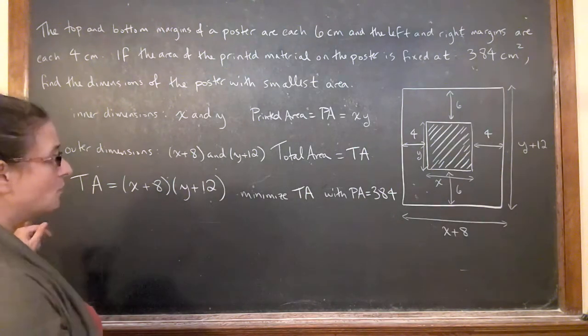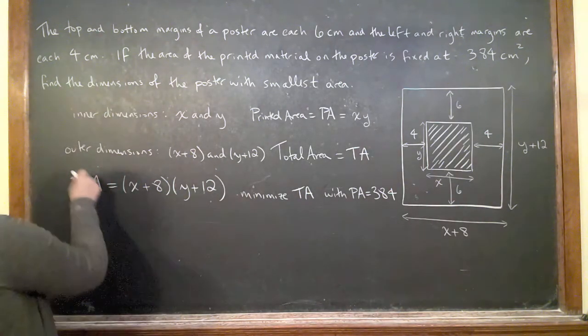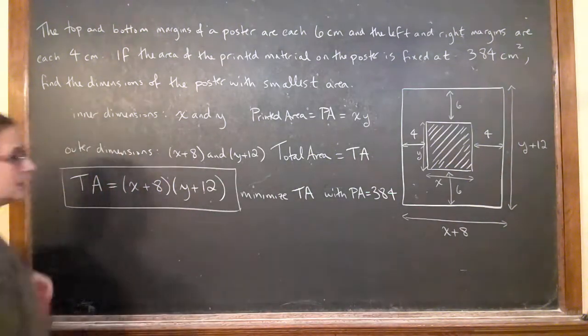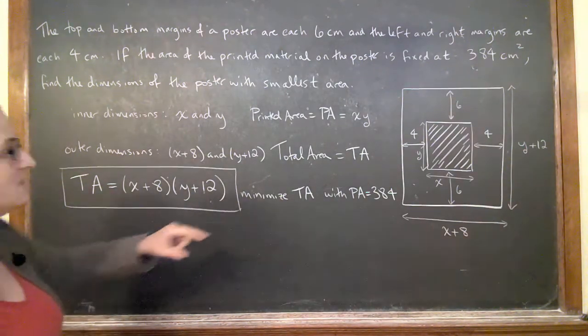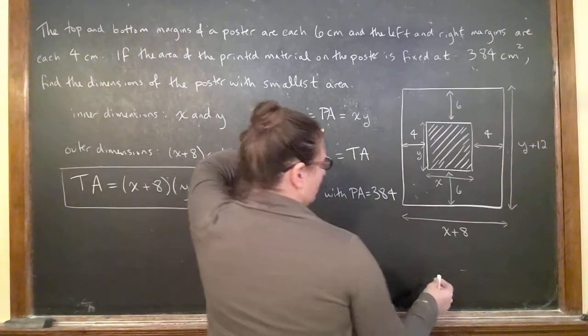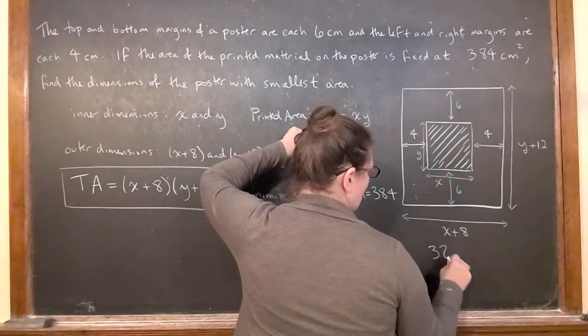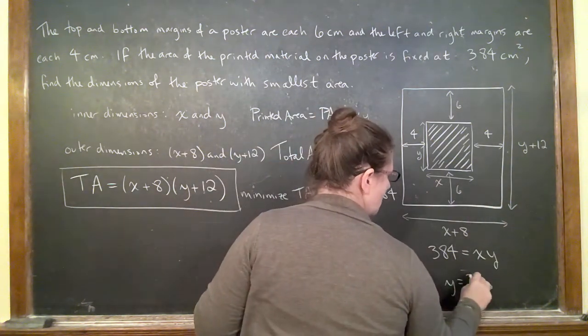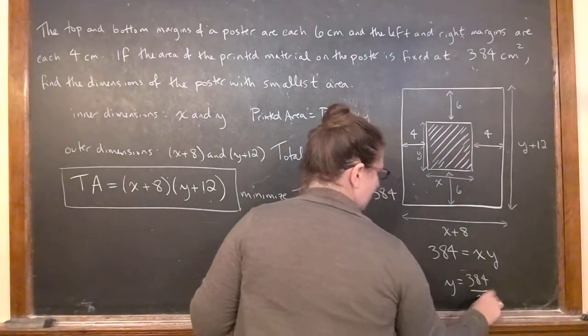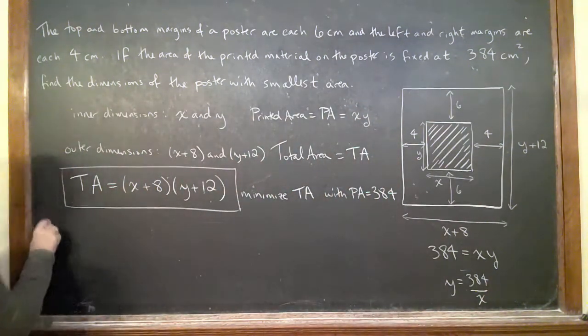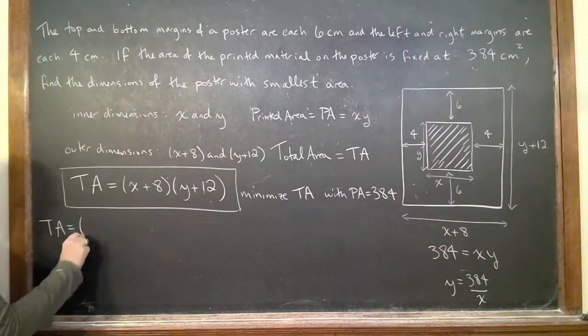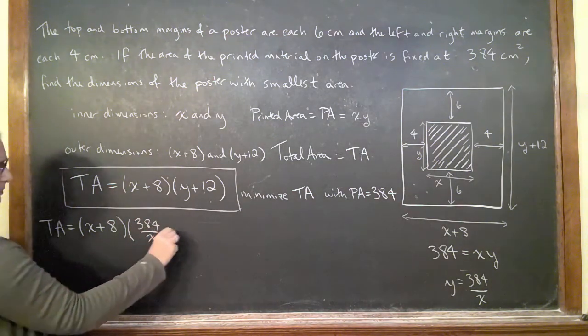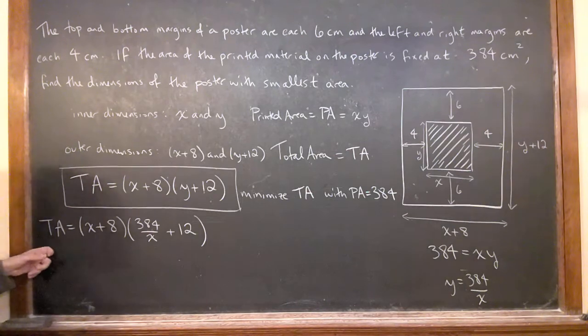What I want to do is take my total area. This is what I want to take the derivative of, so I need it in terms of one variable. I'm going to use the fact that this printed area has to be 384 to solve for a variable. I'm going to eliminate the y. So for my total area, I've got x plus 8 times 384 over x plus 12.